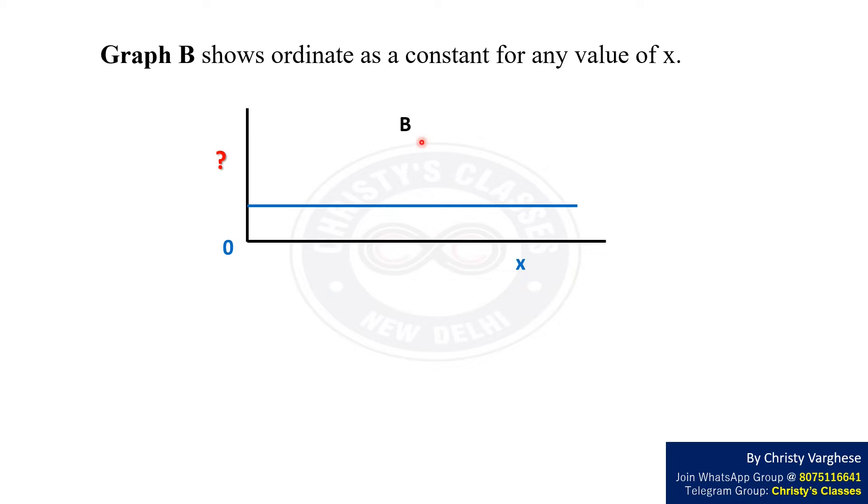Now let us take a look at graph B. In general, abscissa refers to the horizontal axis and ordinate refers to the vertical axis of a standard two-dimensional graph.